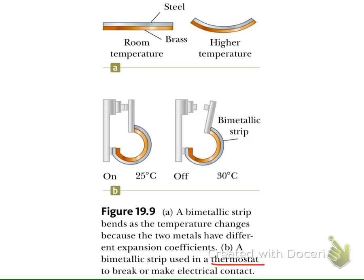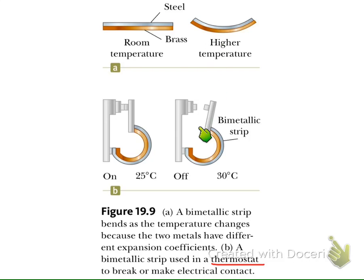From this bending, we can use it as a thermal switch. At room temperature, we may have a connector made of two metals, acting as an electrical switch. But when the temperature rises — say from 25 to 30 degrees — the bending makes the switch open, creating an open circuit here.